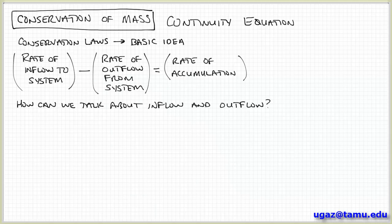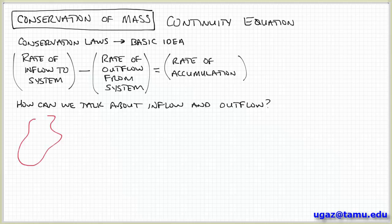We're not talking about any weird physics — I just saw a video on YouTube about Harry Potter, where one of the teachers at Hogwarts changes from a house cat into human form. We're not talking about any weird transformations like that that would seem to violate these conservation laws. For us, mass is a conserved quantity. And so we need to talk about inflow and outflow — what language can we use to describe that?